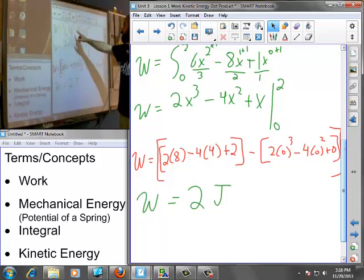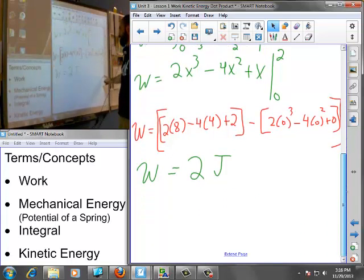All right, simple enough, right? All we had to do was integrate our function of F from zero to two meters and evaluate it. We did so, we integrated, evaluated it from two to zero meters, plugged in our variables for two, and solved.